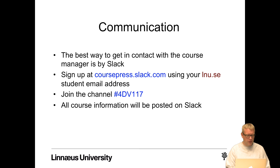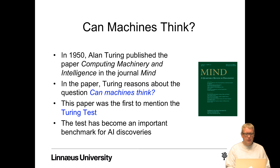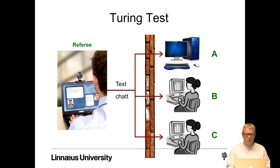Now we're going to start with some history of AI and machine learning. AI started with the paper 'Can Machines Think?' written in 1950 by Alan Turing, published in 'Computing Machinery and Intelligence' in the journal Mind. He discussed and reasoned about whether machines can think, and this paper was the first to mention the widely known Turing test, which has become an important benchmark for AI discoveries.